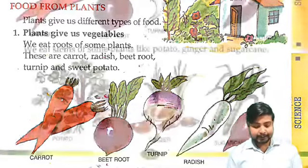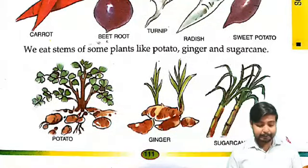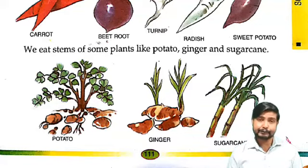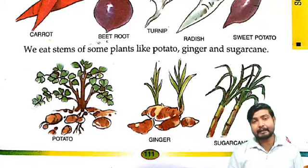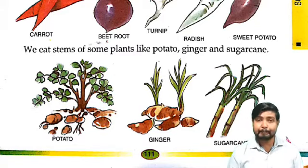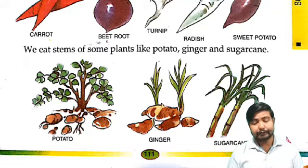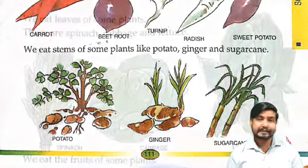We eat the root of some plants like potato. In saba ka kaun sa part khaate hai? Root, okay? Then we eat the stem of some plants like potato, ginger, sugarcane. Aur aise bhi kai plants se jinka hum stem khaate hai. Kaun sa part? Uska stem khaate hai. For example, potato, ginger, sugarcane — in sab ka hum stem khaate hai.